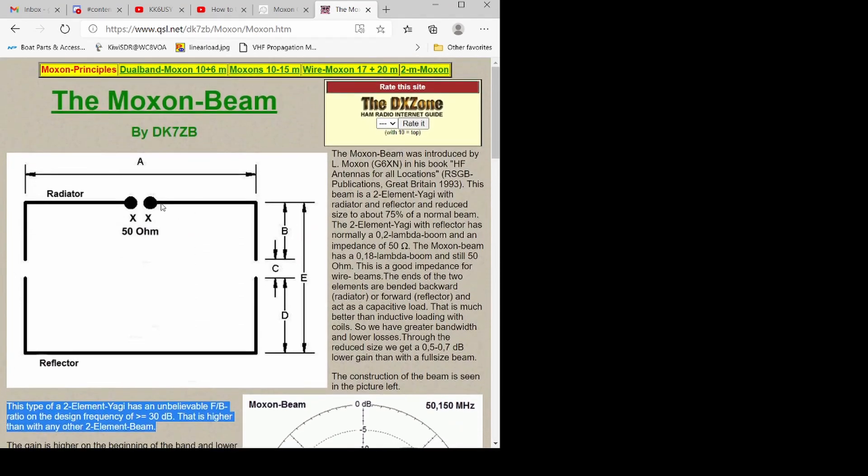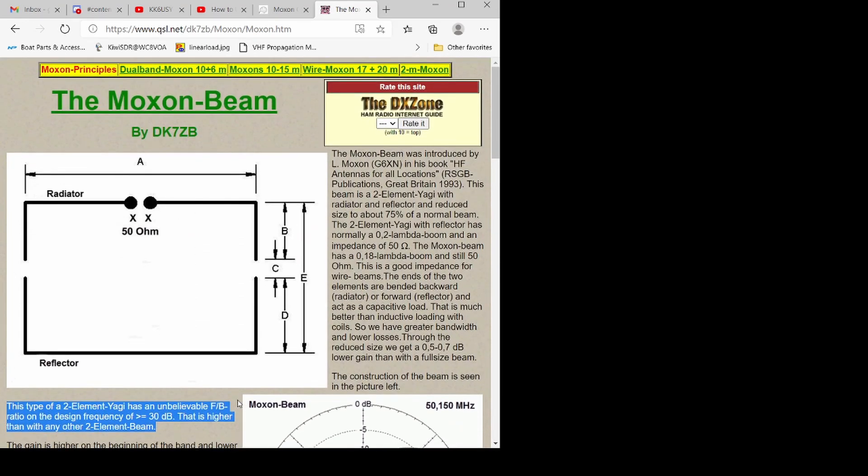I put in Moxon antenna by DK7ZB and this one came up. He goes on to talk about how Les Moxon was the inventor, G6XN out of Great Britain. It's a two element Yagi basically with folded sides.